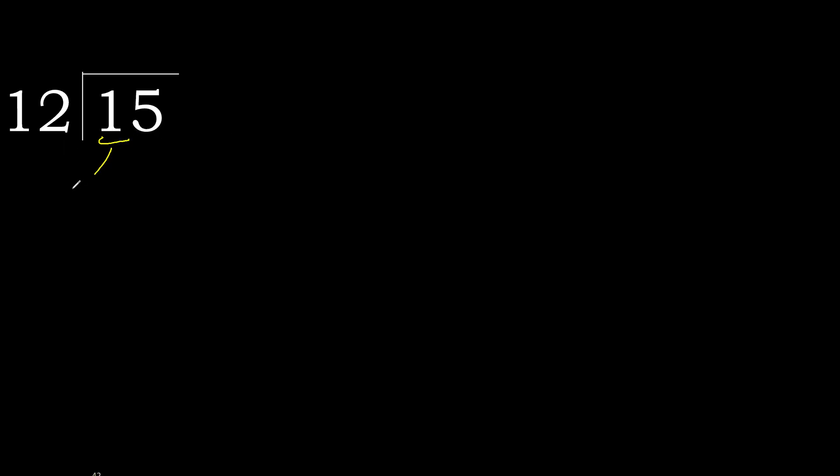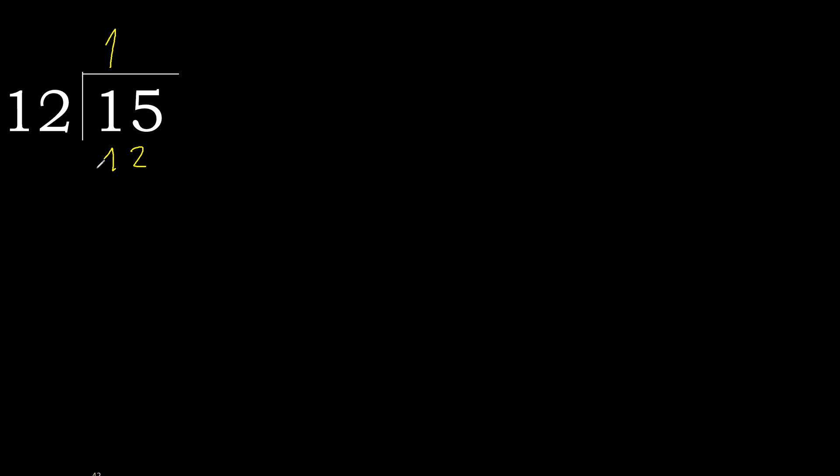15 divided by 12. 1 is less, therefore next. 15 is not less, therefore with 15. 12 multiplied by which number is nearest to 15 but not greater? 12 multiplied by 2 is 24 — 24 is greater. 12 multiplied by 1 is 12, which is not greater.